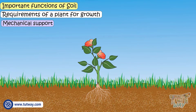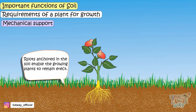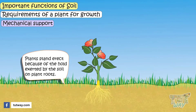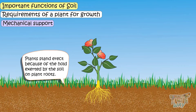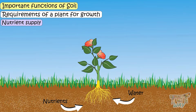Mechanical support: roots anchored in the soil enable growing plants to remain erect. Plants stand erect because of the hold exerted by the soil on plant roots. Nutrient supply: roots go deeper into the soil in search of nutrients, water, and air.